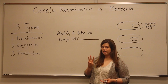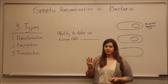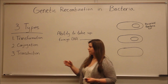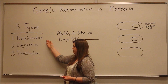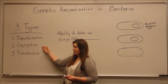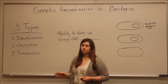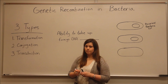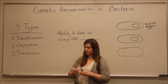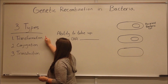There are three different mechanisms by which bacteria can obtain foreign DNA. These are transformation, conjugation, and transduction. I have videos on all three of these mechanisms, but today let's talk about the first one, transformation.